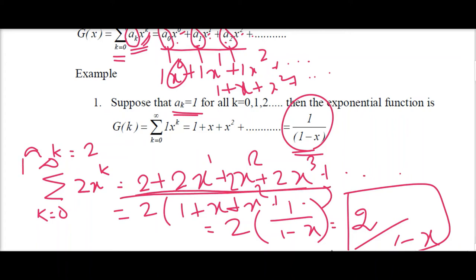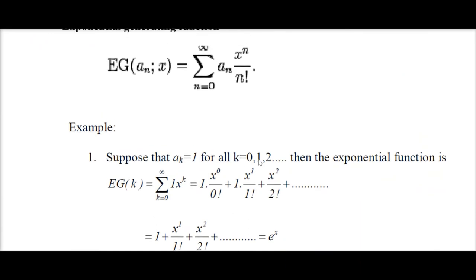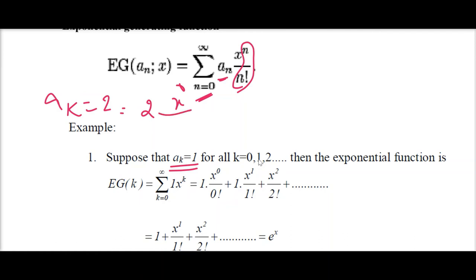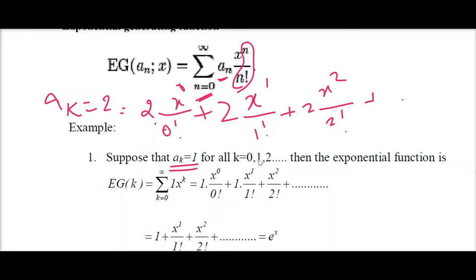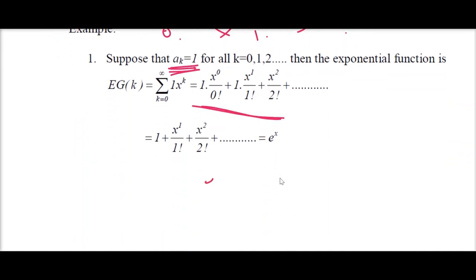From this series you are given a generating function; from there you expand the series, and from the series you find the function. Similarly, for the exponential generating function, the same principle applies. Here an is the value given in the problem, and x power n over n factorial — both ns represent the variation in values. If ak equals 2, then it becomes 2·x power 0 over 0 factorial plus 2·x power 1 over 1 factorial plus 2·x power 2 over 2 factorial, and so on. After consolidating, this leads to e power x.